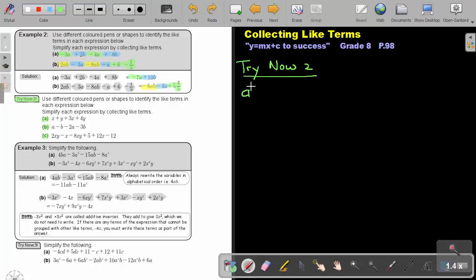Let's look at number A. I prefer to rewrite first everything to make, to get rid of unnecessary mistakes. My algebraic expression is having 1, 2, 3, 4 terms. So first I have to highlight or mark my like terms.